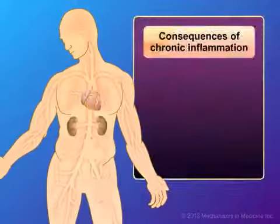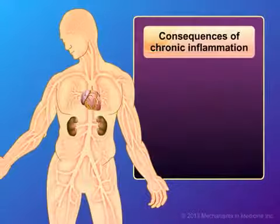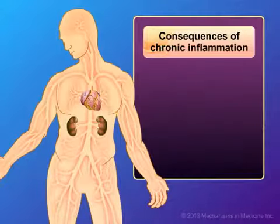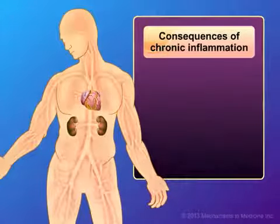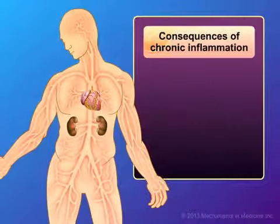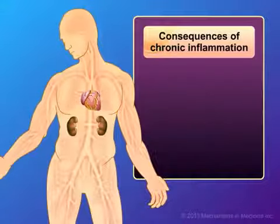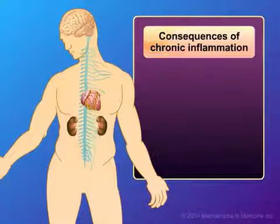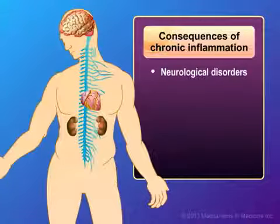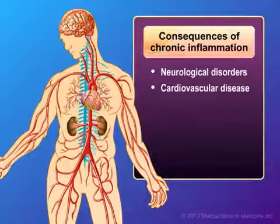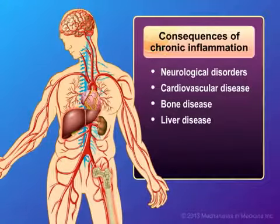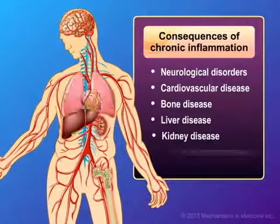The consequences of chronic inflammation, despite effective suppression of HIV replication with ART, is an area of active research, but may lead to damage to multiple organs with increased risk for common diseases, such as neurological disorders, cardiovascular disease, bone disease, liver disease, kidney disease, and pulmonary disease.